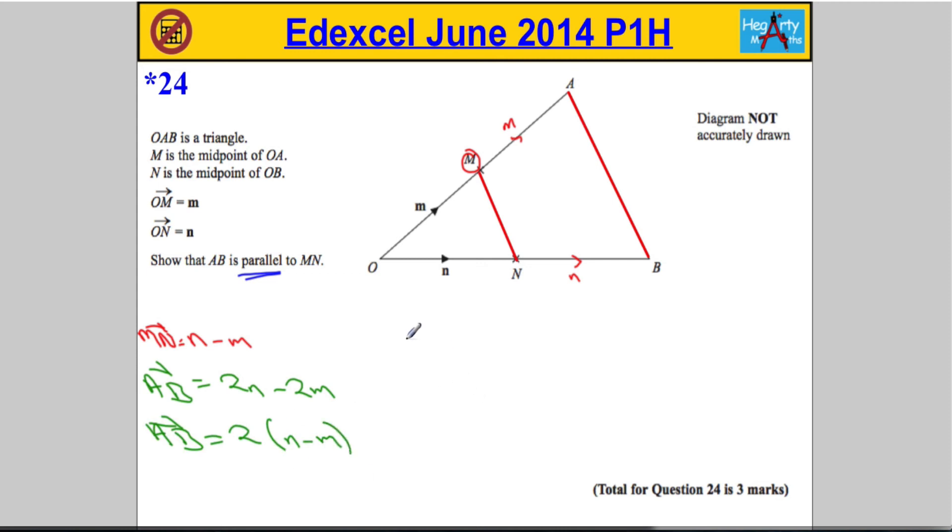And what we can say is that means that as the vector AB is a multiple of MN, they must be parallel. P-A-R-A-L-L-E-L, parallel. And that should get you the full 3 marks.